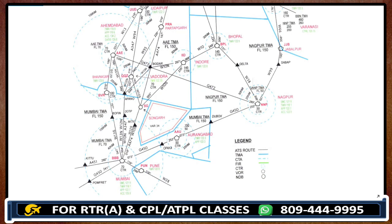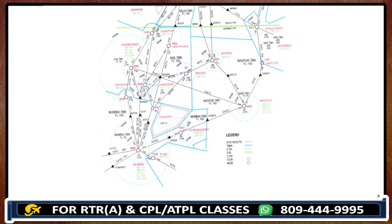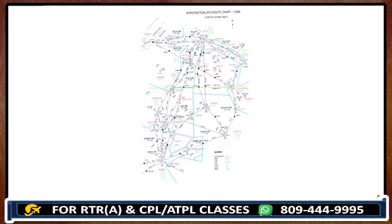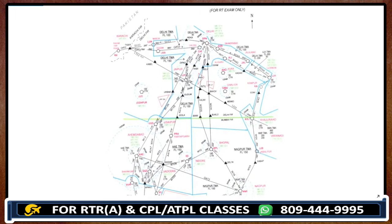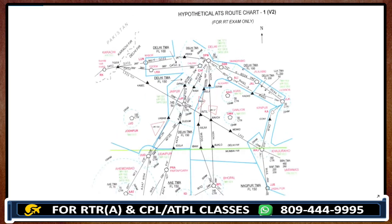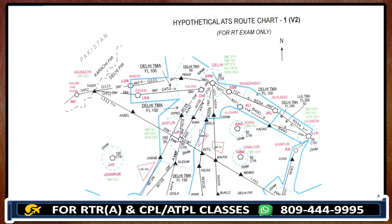Later on, once we start how to make calls in RT, we will discuss how to give a position report. But just for your knowledge, wherever you see a solid black triangle, those are the compulsory reporting points where the pilot must report its position. I hope you enjoyed this lecture.